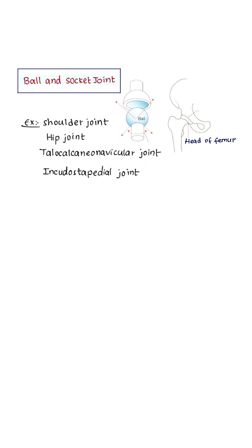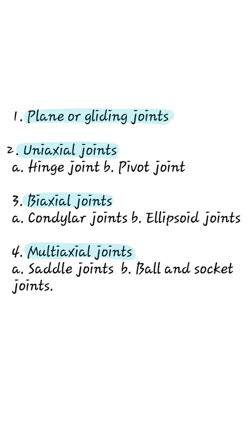In summary, planar gliding joints include intercarpal, intertarsal, intermetacarpal, and intermetatarsal joints, as well as joints between articular processes of adjacent vertebrae.